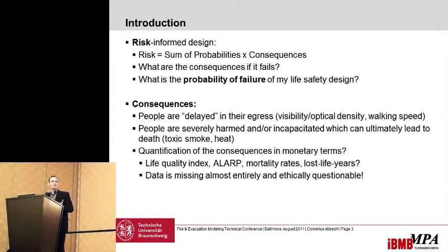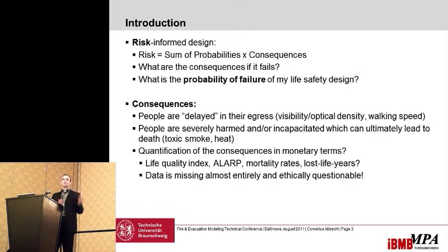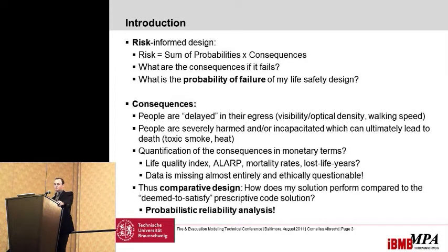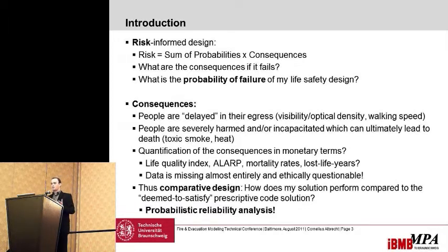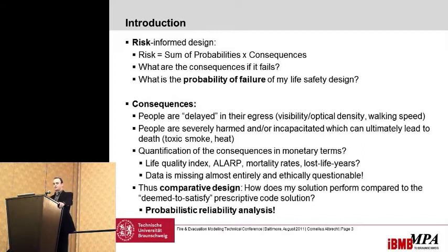But data is not really available, and it's ethically questionable — I don't want to be the one saying that not using a sprinkler system saves more money than having two people die. So I'd rather look at the probability side and use comparative design: how does my solution perform compared to the deemed-to-satisfy solution? Is my design better or worse than what's generally accepted? For that, we do probabilistic reliability analysis.